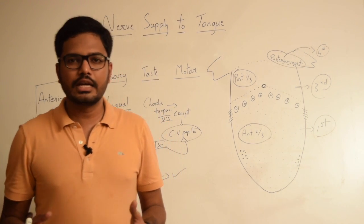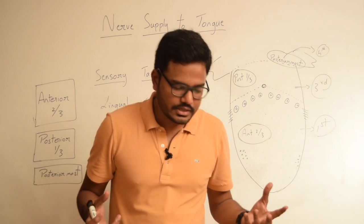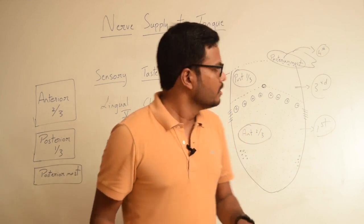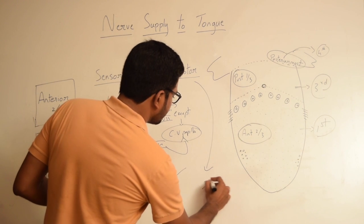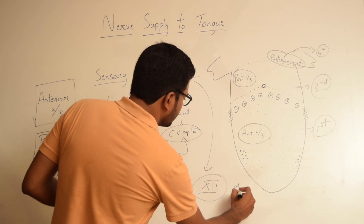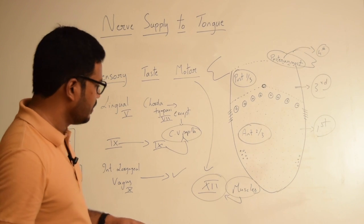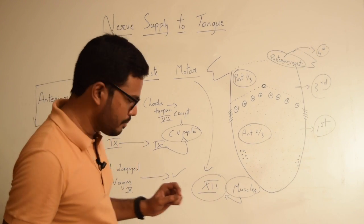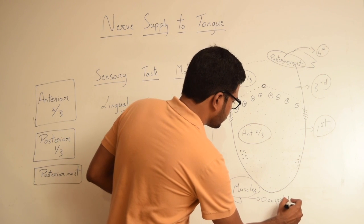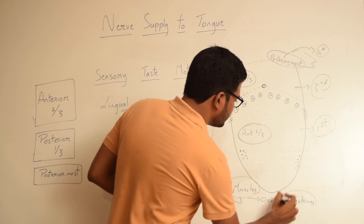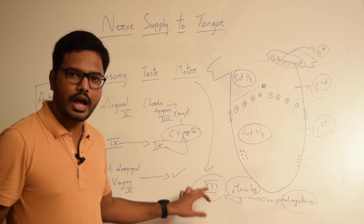Apart from this, we have the musculature. As the tongue is a soft organ without any bones, it is made up of two types of muscles broadly — intrinsic muscles and extrinsic muscles. All muscles of the tongue are innervated by the hypoglossal nerve, which is the twelfth cranial nerve, because these muscles have their origin from occipital myotomes.